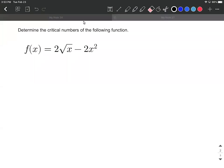On this problem, we're going to be determining critical numbers or critical values for this function. So we have a function that involves a square root: f(x) equals two times the square root of x minus two x squared. Critical values or critical numbers are going to occur whenever the derivative of a function is either equal to zero or undefined.